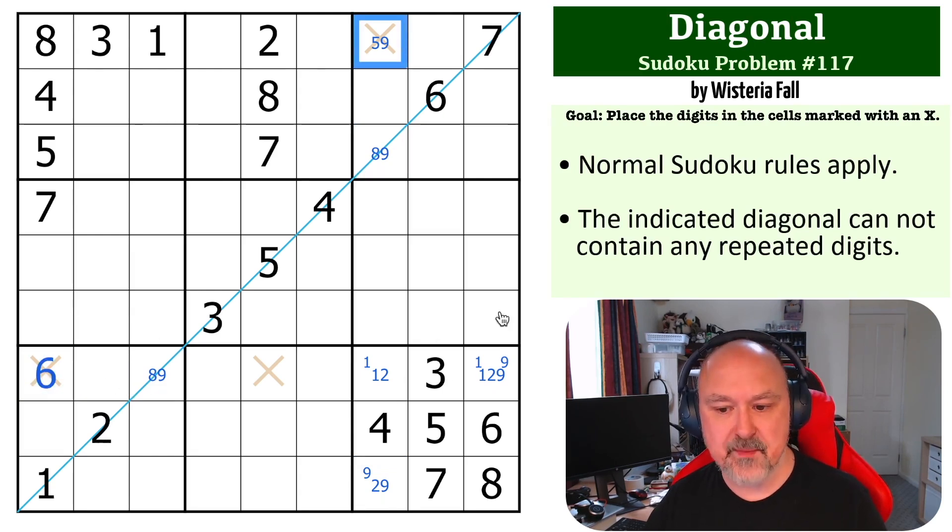And the same trick is happening up here. It's all forced by this being very restricted on the 9s. If this is a 9, this becomes an 8. But because this is a 9, this becomes a 9 to put a 9 in box 9. And this becomes an 8. And we've got two 8s on the diagonal. So this can't be a 9. And this becomes a 5.